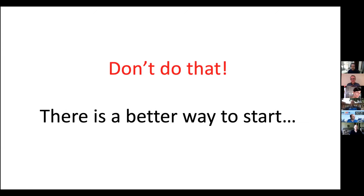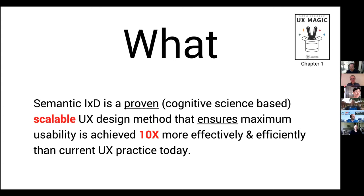I'm really going to tell you not to do that anymore — there actually is a much better, more effective way to start when you go on this journey of trying to design a product, or redesign an old product, a do-over project. So what is semantic interaction design? It's basically a proven cognitive science-based approach to interaction design — specifically the design part, not the full life cycle — that ensures maximum usability.